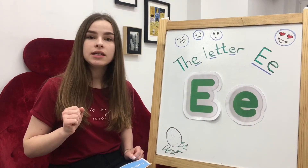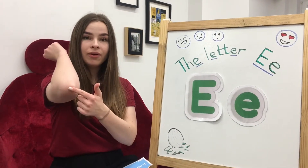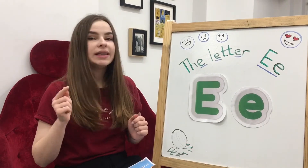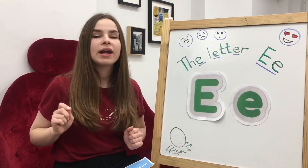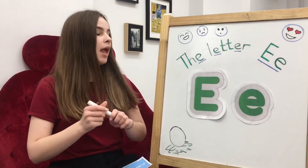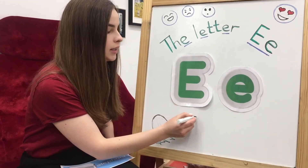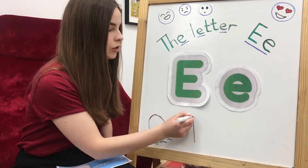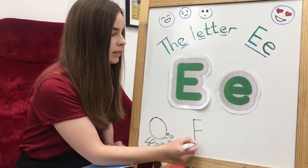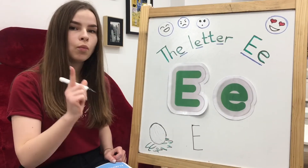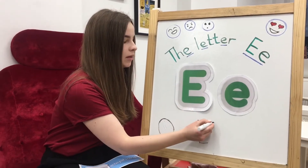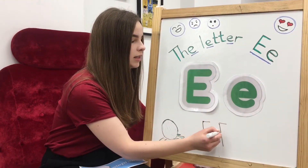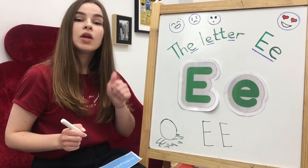And E is for elbow. E, elbow. So, let's look how to write the letter E. We take a marker and start at the top. Then we go down, to the right, to the right, to the right. Let's do it one more time. We start at the top, then we go down, to the right, to the right, to the right. Great!